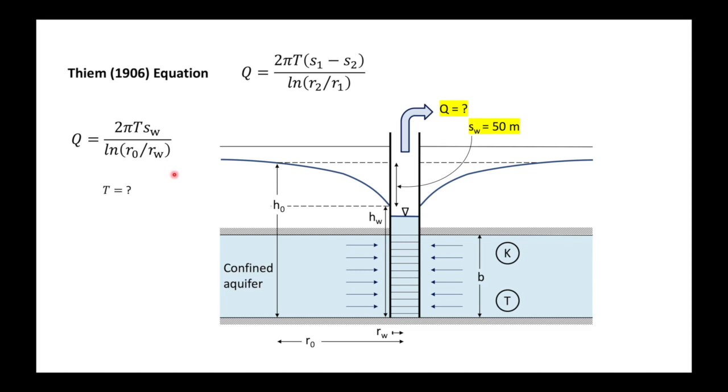Now we know what π is. We don't know what the transmissivity T is. sw is 50 meters as specified before. Our radius of influence is arbitrarily taken as 1000 meters. Our radius of the well, let's assume it's 10 centimeters, 0.1 of a meter. To summarize, in order to find this discharge for drawdown of 50 meters, we just need to find out what is the transmissivity.